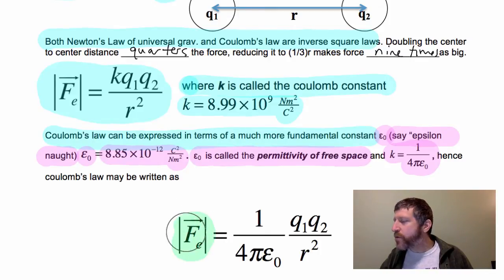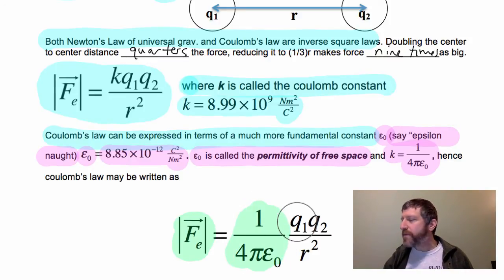The absolute value or the magnitude of the force, the electric force, is 1 over 4 pi epsilon-naught. That whole thing right there is just the Coulomb constant times Q1, Q2 over R squared.